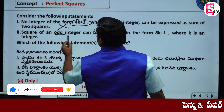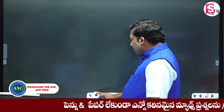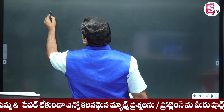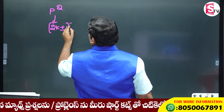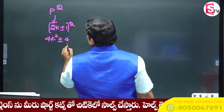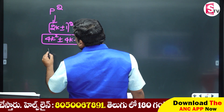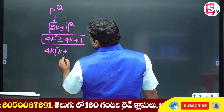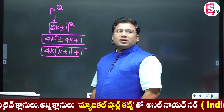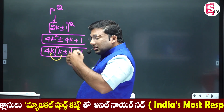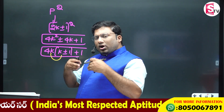One odd number. Write p square. P equals 2k plus r minus 1 whole square. This gives 4k plus r minus 4k plus 1, which is 4k square plus r minus 4k plus 1. So 4k plus r minus 1 plus 1, which is k plus r minus 1 plus 1. You are right here. 4k plus r minus 1, which is k plus 1, i.e. k plus r minus 1.